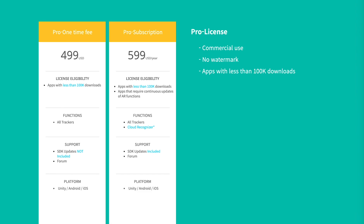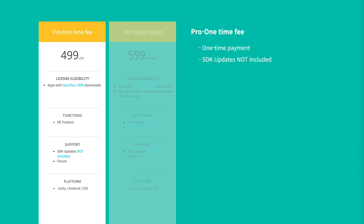The differences between the two Pro licenses are SDK updates and Cloud Recognizer feature. The Pro one-time fee license lets you download the latest version of MaxDare SDK upon payment. This license does not include future version updates, so version updates like SDK 4.0 to 4.1 are unavailable. However, a bug fix release like version 4.0 to 4.0.1 is available. This license is recommended for a short-period event app.